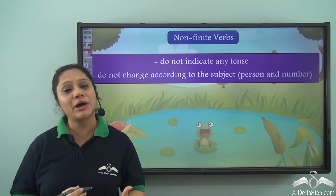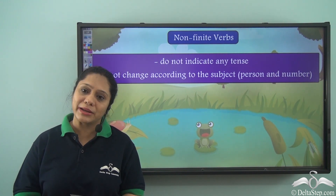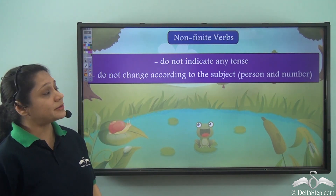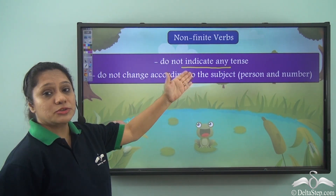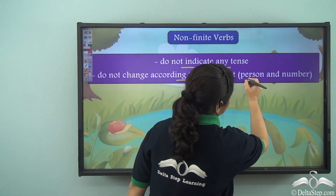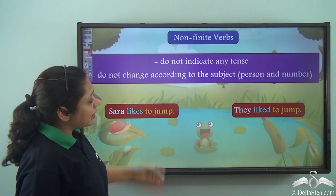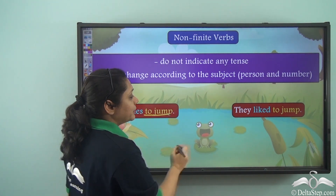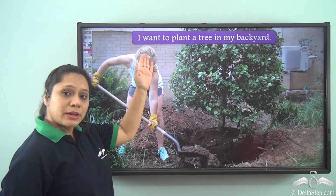We have already learnt about finite verbs and non-finite verbs. Today we shall look at non-finite verbs in greater detail. We already know that non-finite verbs do not indicate any tense and they do not change according to the subject both in person and in number. For example, 'Sarah likes to jump' and 'they liked to jump' — in both sentences, 'to jump' does not change, so 'to jump' is the non-finite verb.